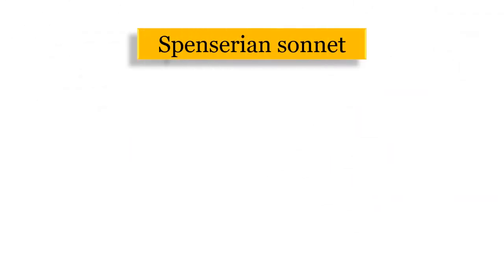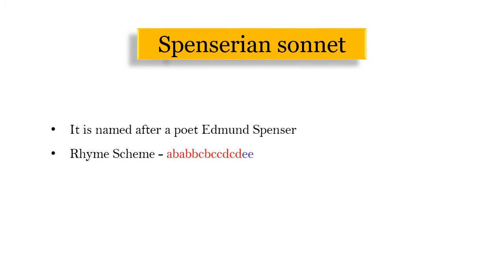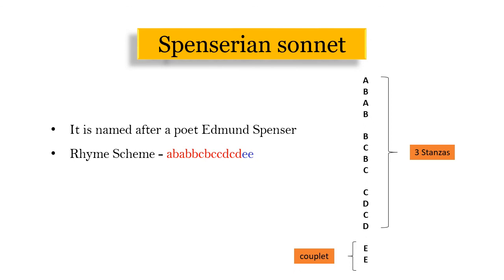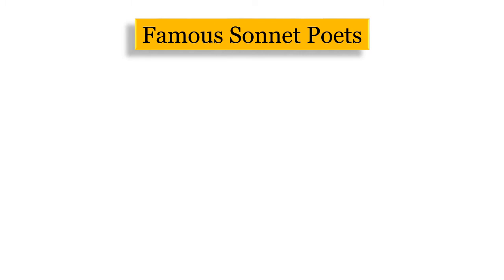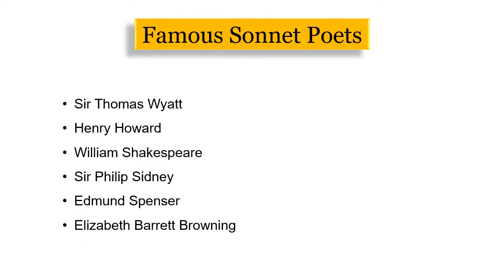The third type is the Spenserian sonnet, named after the great English poet Edmund Spenser. It is similar to the Shakespearean sonnet but the main difference is the rhyme scheme. The rhyme scheme is ABAB, BCBC, CDCD, EE — where EE is the closing couplet.